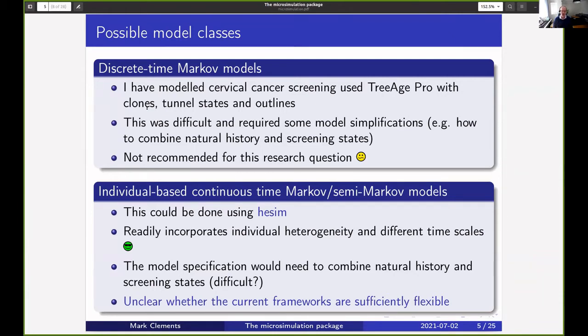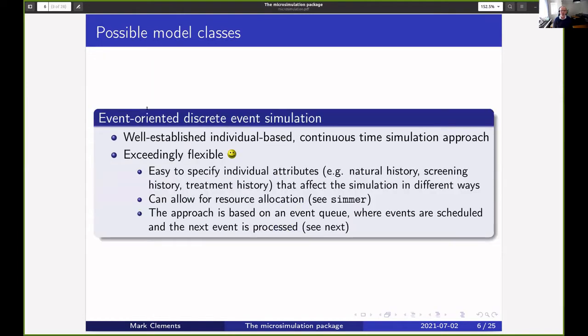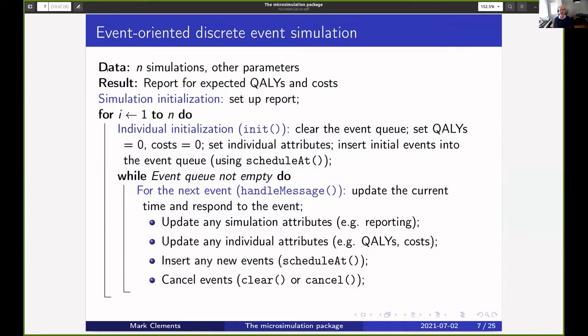As a third broad class, we looked at using event-oriented discrete event simulation. It's well-established and exceedingly flexible. You can have individual attributes to do with natural history, screening history, or treatment history that can affect the simulation in other ways. You can also allow for resource allocation. All of these models are based on an underlying event queue and you pull out the next event and change the event queue.